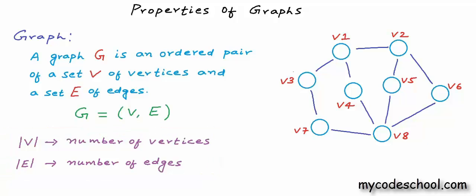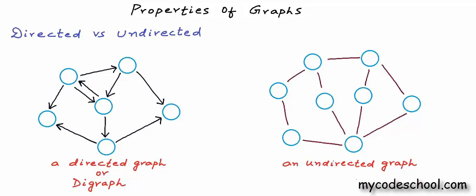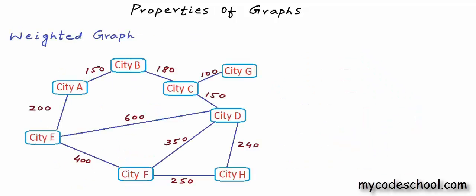Edges in a graph can either be directed, i.e. one-way connections, or undirected, i.e. two-way connections. A graph with only directed edges is called a directed graph or digraph, and a graph with only undirected edges is called an undirected graph. Sometimes all connections in a graph cannot be treated as equal, so we label edges with some weight or cost. A graph in which some value is associated to connections as cost or weight is called a weighted graph, and a graph is unweighted if there is no cost distinction among edges.